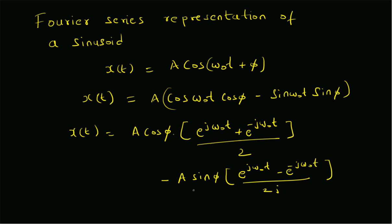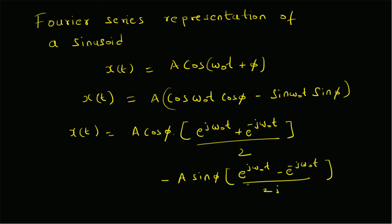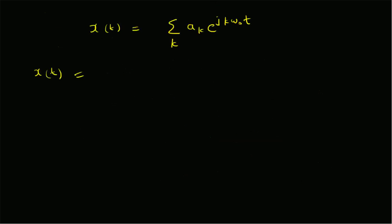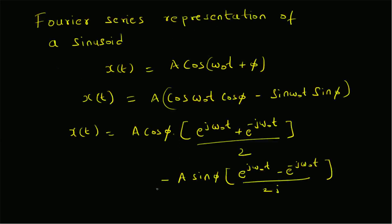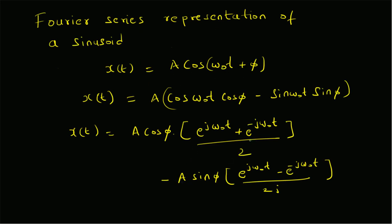To enable a better comparison, we rewrite x(t) by gathering all the terms that have e^(jω₀t) as a common factor. Collecting those terms, we get [A·cos(φ) - A·sin(φ)/(2j)] multiplied by e^(jω₀t).